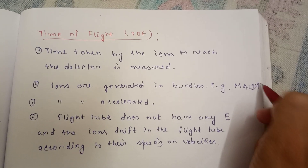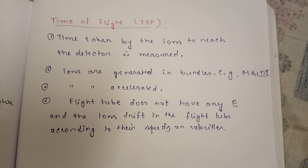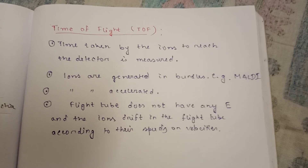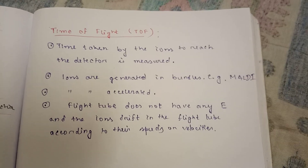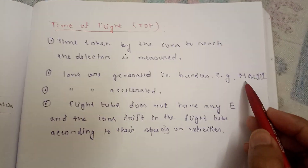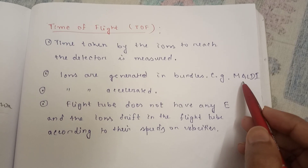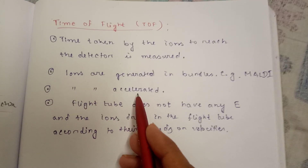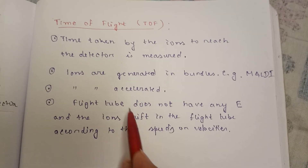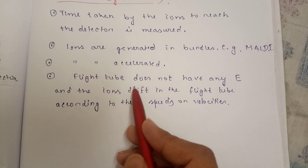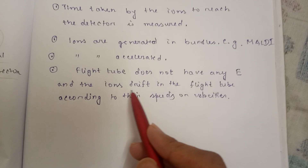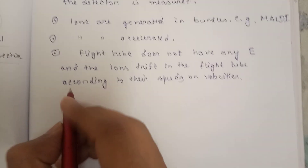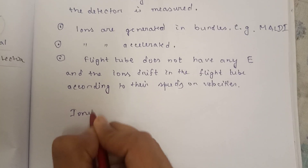In TOF, ions are generated in bundles, which is why MALDI — matrix-assisted laser desorption/ionization — is used. If you don't know about MALDI, you can watch my previous videos on mass spectrometry; links will be in the description box. In short, MALDI is a process of ionization with a matrix assist, and ions are generated in bundles. These ions are then accelerated. The flight tube does not have any electric field, and the ions drift in the flight tube according to their speeds or velocities.